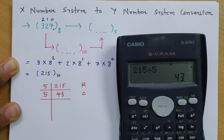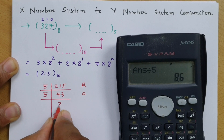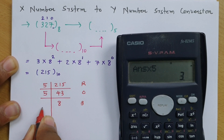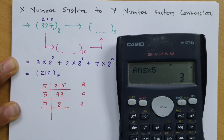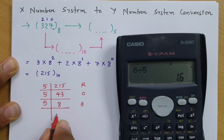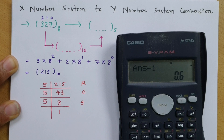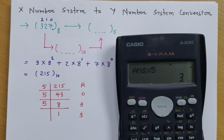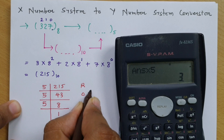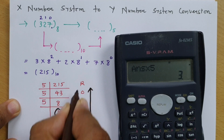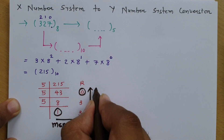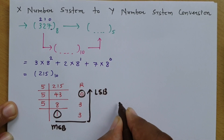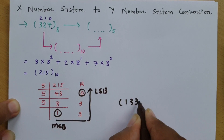Again we divide 43 by 5: that is 8.6, so 8 with remainder 3. Since 8 is greater than 5, we divide again: 8 by 5 is 1.6, so 1 with remainder 3. Reading remainders from MSB to LSB, the final answer is 13330 in base 5.